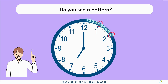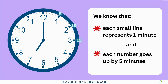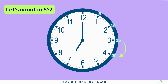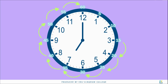If you haven't noticed already, every big number goes up by 5 minutes. Now we know that each small line represents 1 minute, and each number goes up by 5 minutes. Counting up by 5s: 1 would be 5 minutes, 2 would be 10 minutes, 3 would be 15 minutes, 4 would be 20 minutes, 5 would be 25 minutes, and so on.